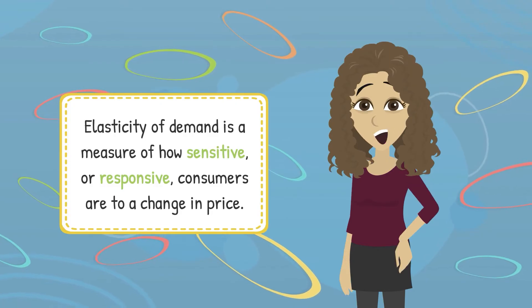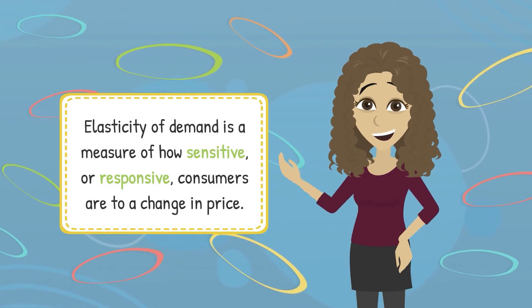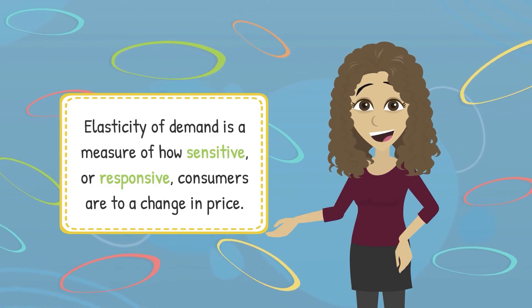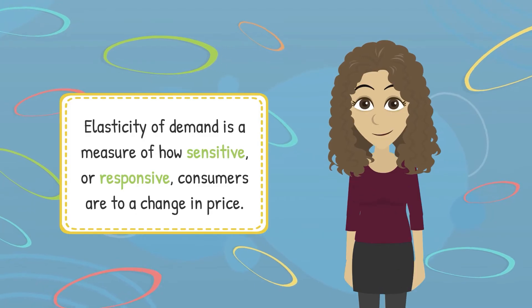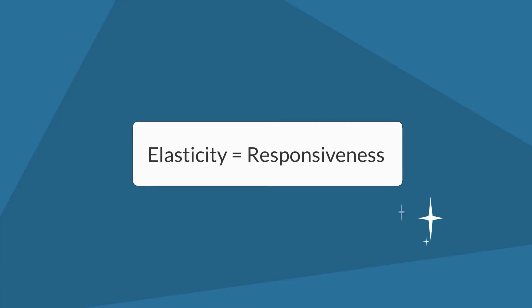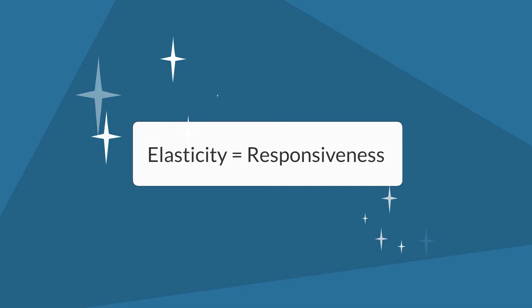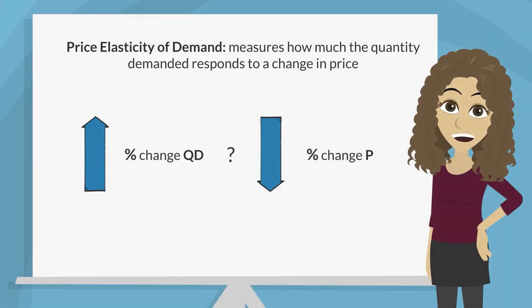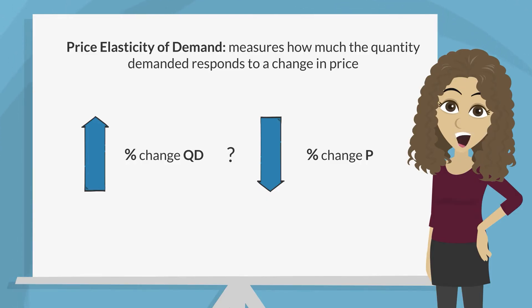Price elasticity of demand is a measure of how sensitive, or responsive, consumers are to a change in price. Note to self: when you see the word elasticity in economics, think responsiveness. For any given good or service, the price elasticity of demand measures how much the quantity demanded by consumers responds to a change in the price of that good or service.